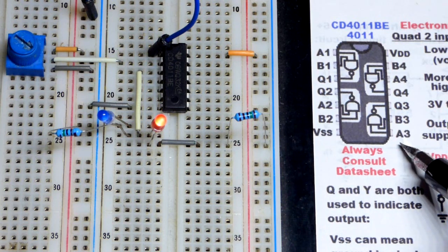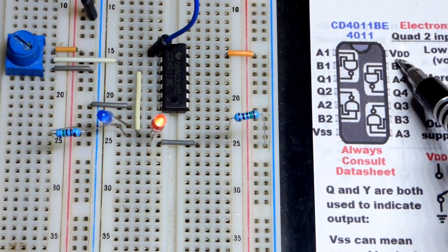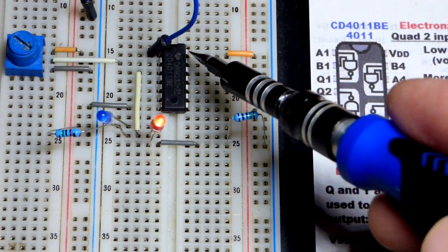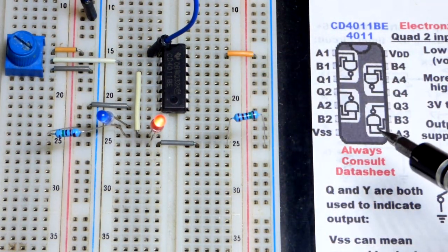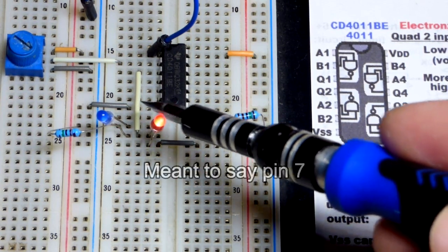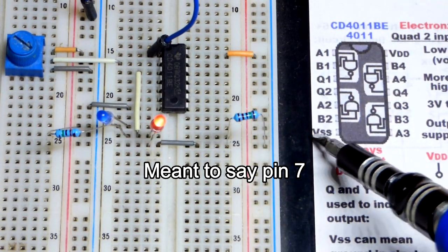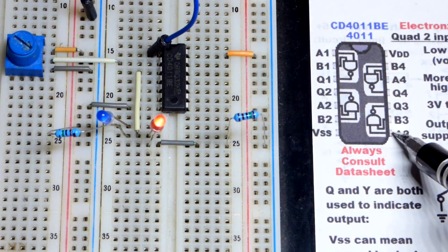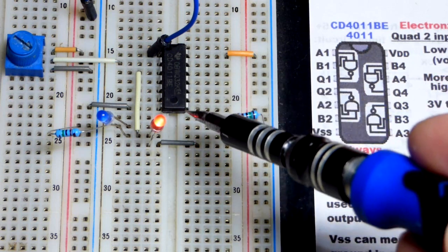When you're first learning about integrated circuits, it can get overwhelming to deal with all these pins. First thing: learn to power them up. In this case, we got the positive supply to pin 16 at the top, and pin 8 goes to the negative supply (VSS). Already we got two pins knocked out of the way.